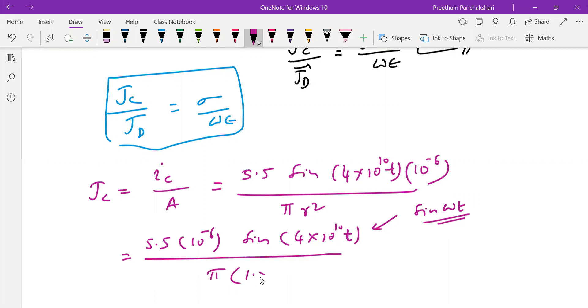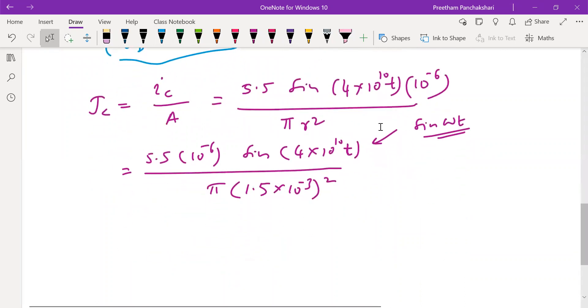So now π into the radius is 1.5 millimeter, so r square. That's about the conduction current density.